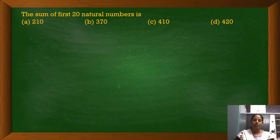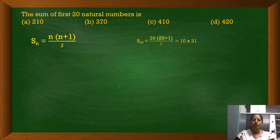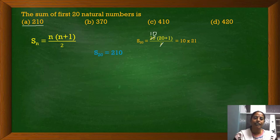Here is a question: The sum of the first 20 natural numbers is — with 4 options. We know the formula: n(n+1)/2. Here n, the last term, is 20. So 20 × 21 / 2. That is 10 × 21 = 210. The answer is 210, which is option A.